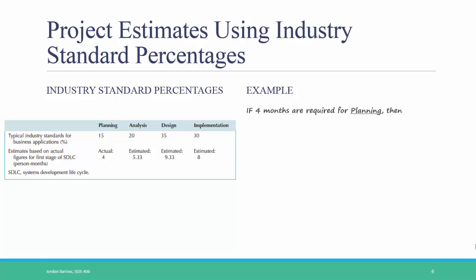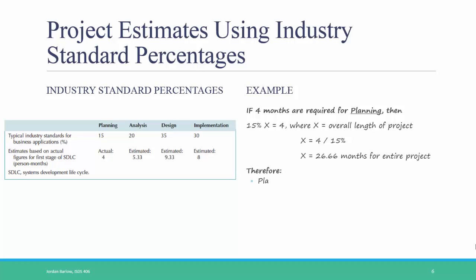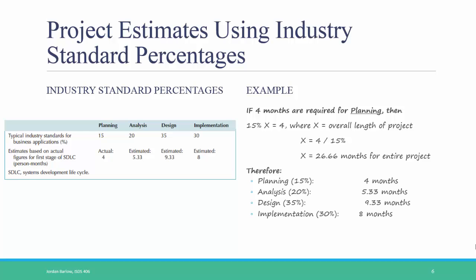For example, if you've spent four months in planning the project, then you might anticipate that the entire project will take about 26.66 months, and you could calculate the amount of time for the remaining phases. A few months is rarely realistic with any project of substance — many large projects take in the range of one to four years to be developed.